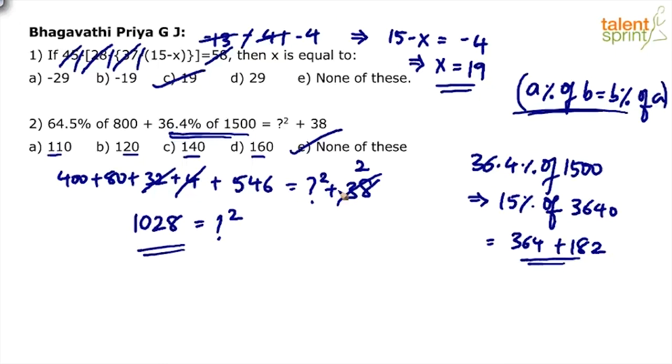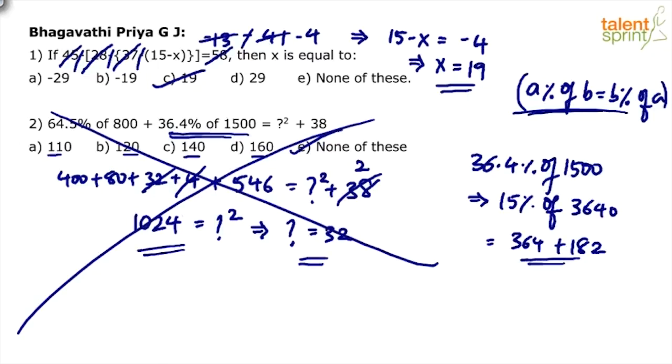But this is a waste of time, although we used smart steps. Instead of finding the square root, we can look at options and verify. 110 squared is much more than 1024, so 120, 140, 160 all get eliminated. We've used smart methods like taking 15% of 3640 instead of 36.4% of 1500, and breaking 64.5% into components. But even after applying all these smart ways, I would still say this is a waste of time.